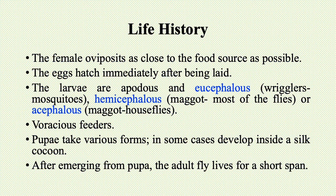The larvae are voracious feeders. Pupae take various forms — in some cases they develop inside a silk-like cocoon, or they may be free. After emerging from the pupa, the adult fly lives for a very short span. These animals complete their life history in only a few days or weeks.